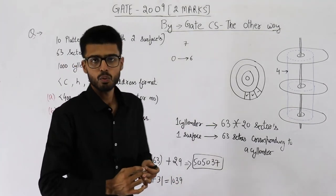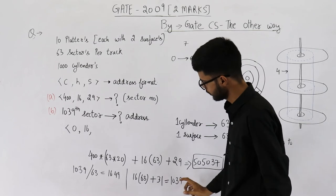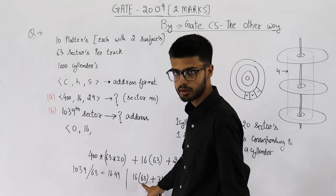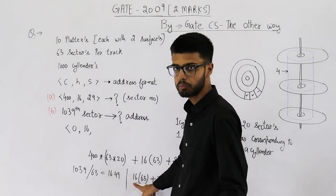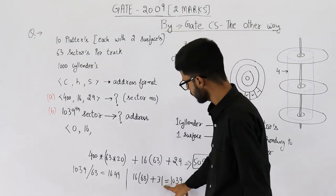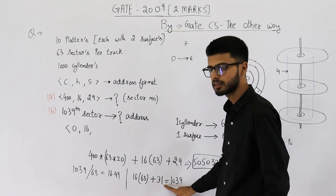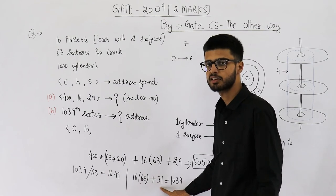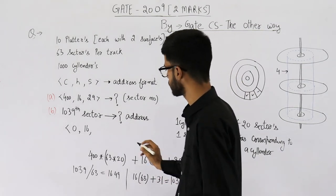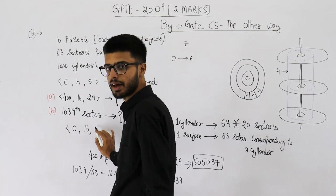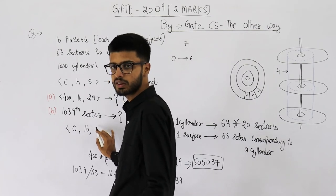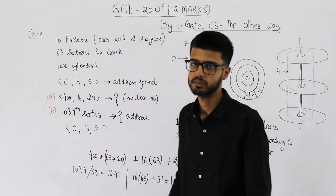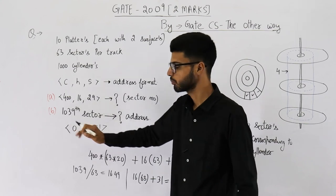If you try forming groups of 63 each, 16 groups will be complete and you'll have 31 items remaining in the next group. So we are not able to fill 63 items in the next group — meaning on the next surface (the 16th surface), only 31 sectors have been filled. So this is the answer for part B.